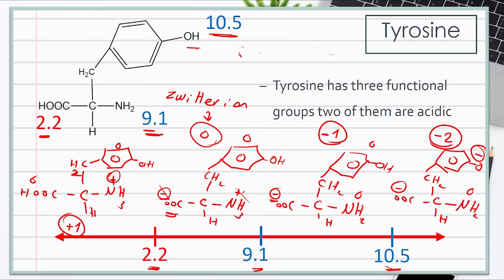The isoelectric point is the average of the two pKa values flanking the zwitterion — 9.1 and 2.2 — because the zwitterion exists between them. pI equals (2.2 + 9.1) divided by 2, which equals 5.6. So the isoelectric point pI is equal to 5.6.